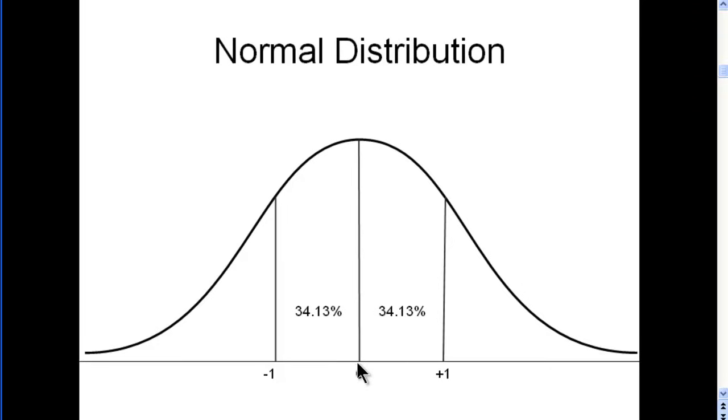And in the normal distribution case, the mean and median are exactly the same. Between zero and negative one, you're going to have 34.13% of the scores. And conversely, between zero and plus one, you're also going to have 34.13% of the scores. So in total, you get 68.26% of all observations within plus or minus one standard deviation away from the mean.